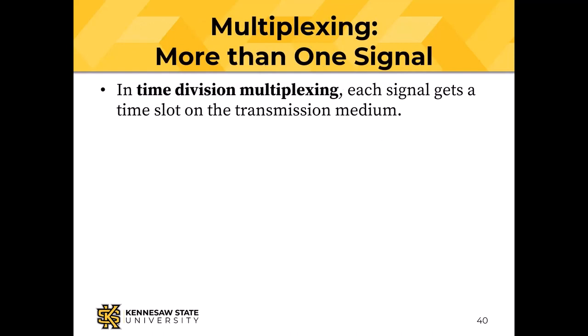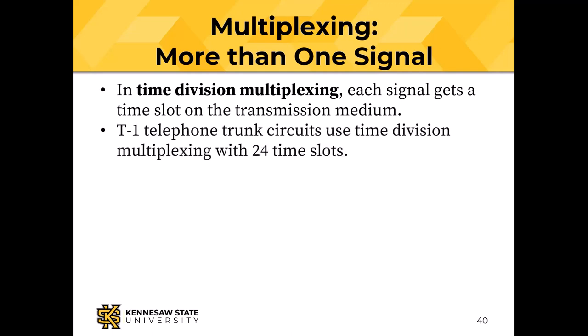You can send more than one signal across a transmission medium — that's multiplexing. In time division multiplexing (TDM), transmission time is divided into time slots. T1 telephone, which transmits signals between central offices, uses TDM with 24 time slots — a piece of one signal, then another, then another, 24 times, then it repeats.